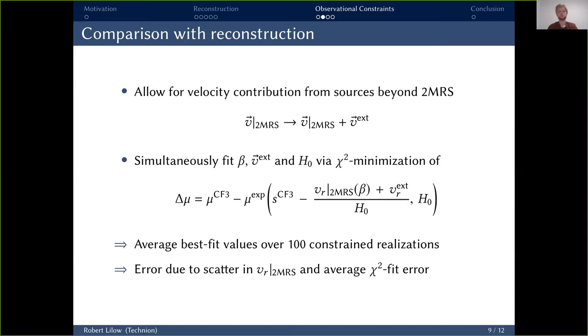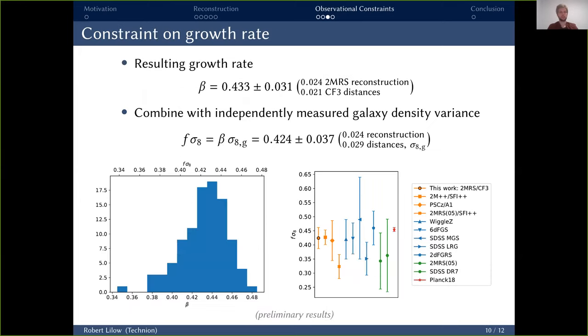To get the best-fit values, we basically have a two-step approach here. For a whole set, in our case again 100 constrained realizations, we compute the best-fit values for these three parameters just by doing a χ² minimization with respect to this Δμ. Then afterwards we take the average over all of these individual best-fit values, which then accounts for the scatter due to our reconstruction uncertainty. This has a nice advantage that we can directly separate these two error contributions. The scatter between constrained realizations is our reconstruction noise, whereas the average error of the χ² fit quantifies the noise due to the observational uncertainty of the Cosmic Flows distances.